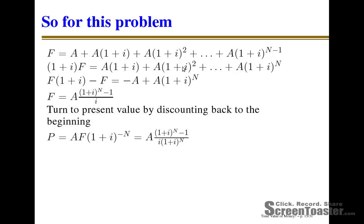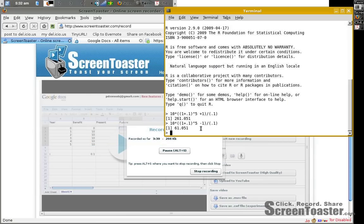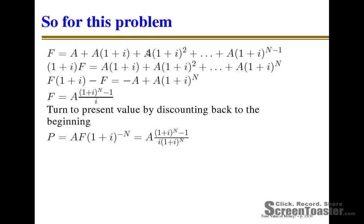What you have remaining is A times (1+i)^n less A. After rearranging and solving for just the future value, you find that F equals A times [(1+i)^n - 1] / i. If you go ahead and make that calculation — 10 times [(1+i)^5 - 1] divided by the interest rate — you find the future value is $61.05, which is exactly what we had before. This is a simple explanation of where the constant series equation comes from.